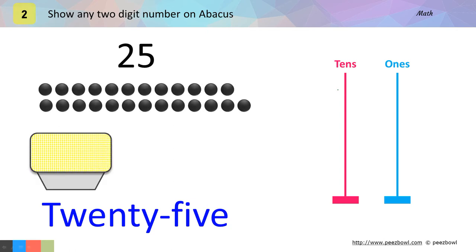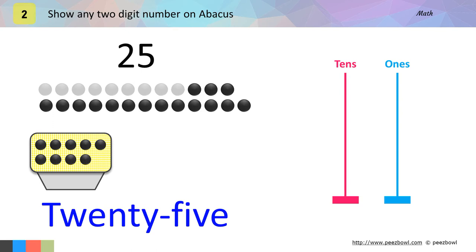I bring my first box. Let us put 10 balls in this box. Here I have 1, 2, 3, 4, 5, 6, 7, 8, 9 and 10 balls in the first box. Now let us count the remaining number of balls. Here we have 1, 2, 3, 4, 5, 6, 7, 8, 9, 10, 11, 12, 13, 14 and 15 balls.